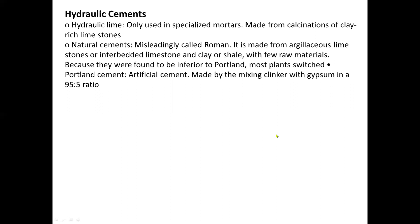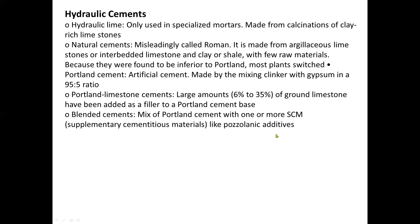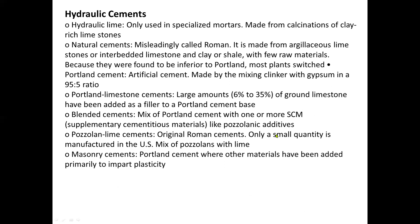Portland cement is an artificial cement made by mixing clinker with gypsum in a 95-to-5 ratio. Portland limestone cements have a large amount — from 6% to 35% — of ground limestone added as a filler to a Portland cement base. Blended cements are a mix of Portland cement with one or more supplementary cementitious materials, such as pozzolanic additives. Pozzolan-lime cements, the original Roman cements, are manufactured only in small quantities in the U.S., as a mix of pozzolans with lime. Masonry cements are a type of Portland cement where other materials have been added primarily to impart plasticity.